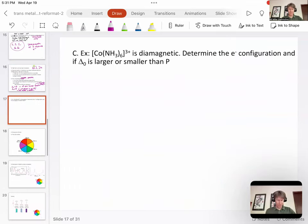So those will be our two choices. Let's see how this works. So we have cobalt with a 3 plus charge with six ammonia ligands. And it says it's diamagnetic. It says determine the electron configuration, and if delta zero, the crystal field splitting energy, is larger or smaller than the pairing energy. Let's go ahead and do that.